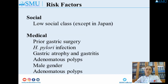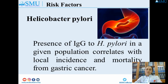Social factors include low social class, of course except in Japan. Medical factors include prior gastric surgery, Helicobacter pylori infection, gastric atrophy and gastritis, adenomatous polyps, and male gender. Helicobacter pylori: the presence of IgG to Helicobacter pylori in a given population correlates with local incidence and mortality from gastric cancer.